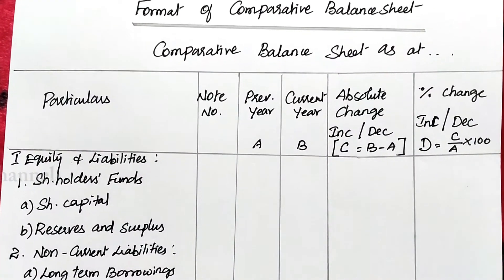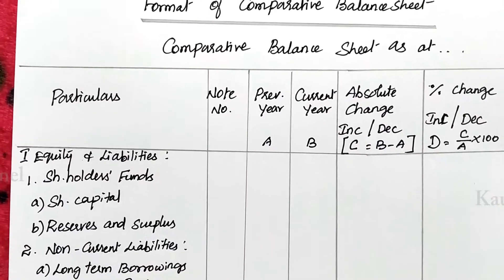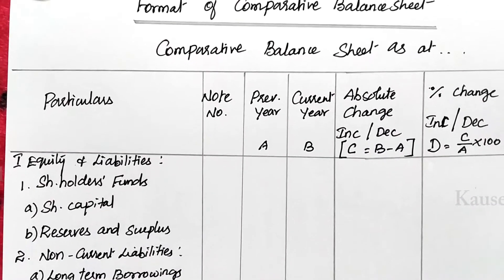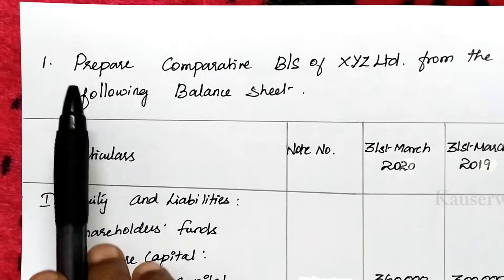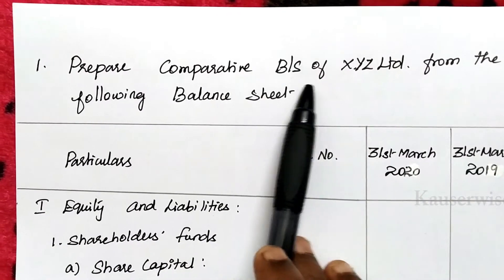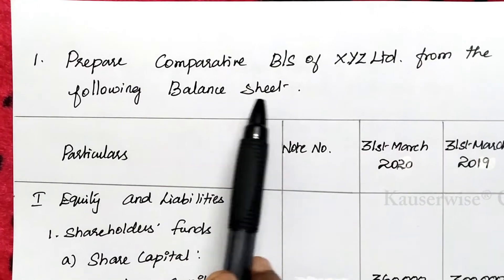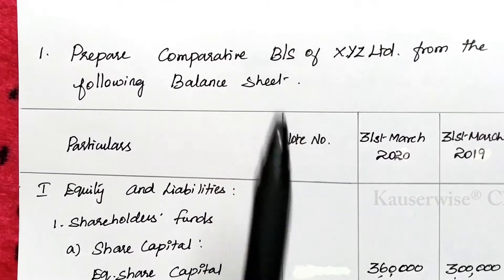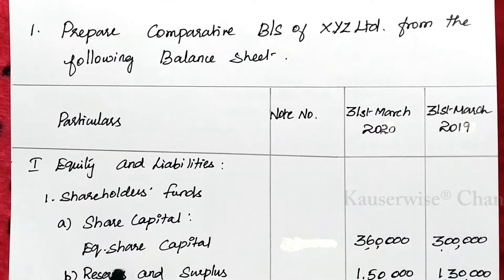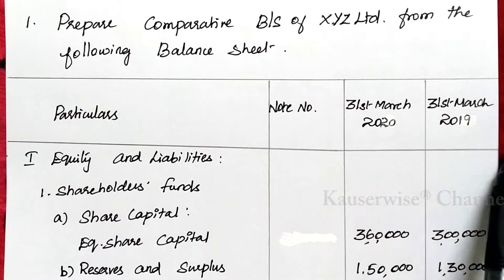This is the method to compare a balance sheet between two different years. Now let us see the problem: prepare the comparative balance sheet of XYZ Limited from the following balance sheet. They have given balance sheet data for two different years — 31st March 2020 and 31st March 2019.